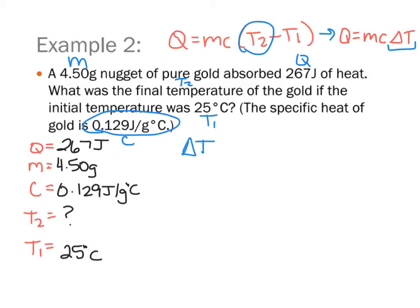So my formula is still Q equals MC delta T, but my working equation for this problem is going to be Q over MC. So looking at the corner over here, this is all multiplication. So if I want to get rid of two of these variables, I need to divide both sides by that, which is going to end up giving me Q over MC.